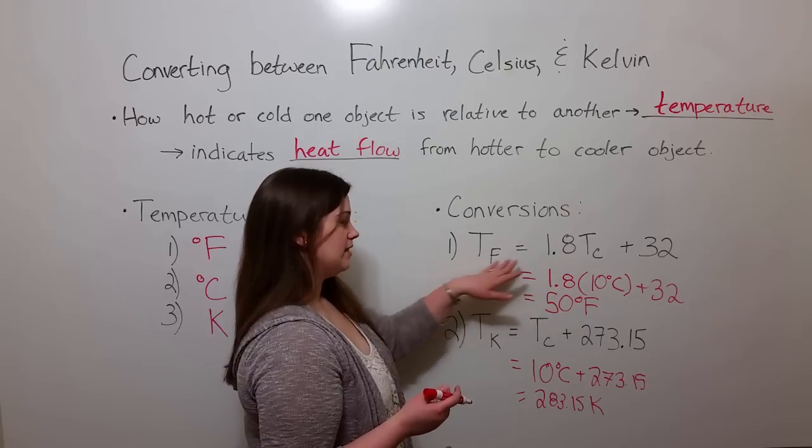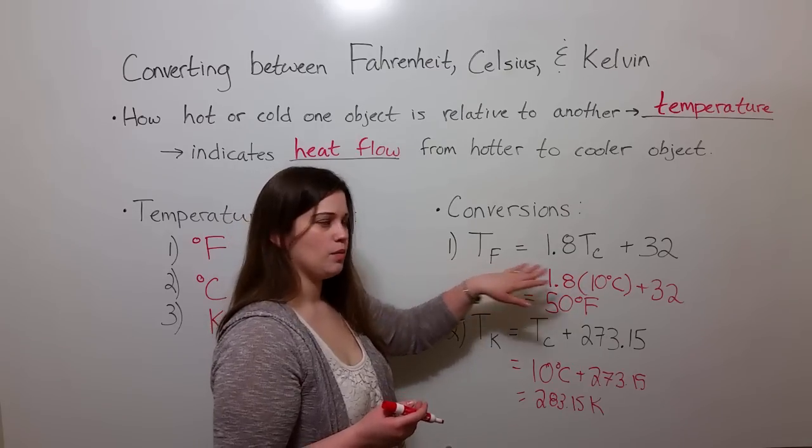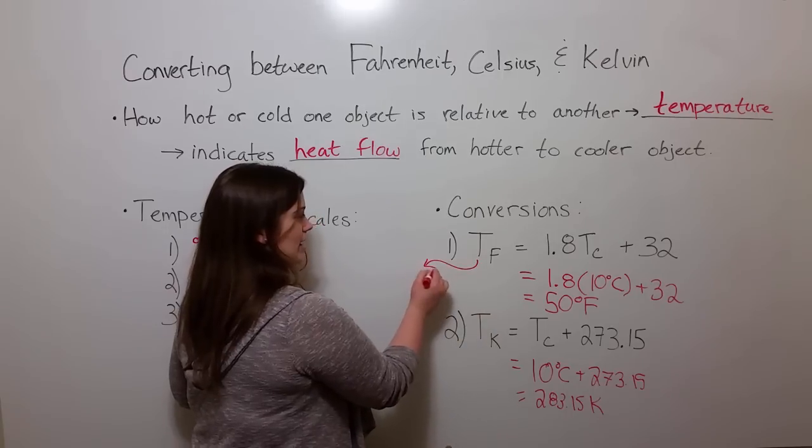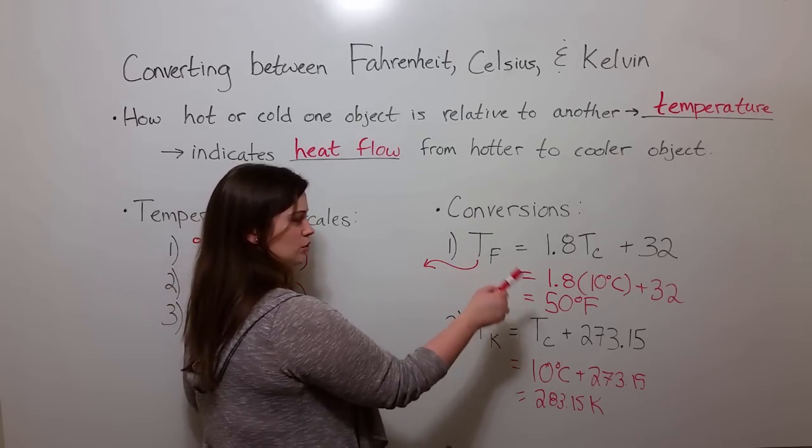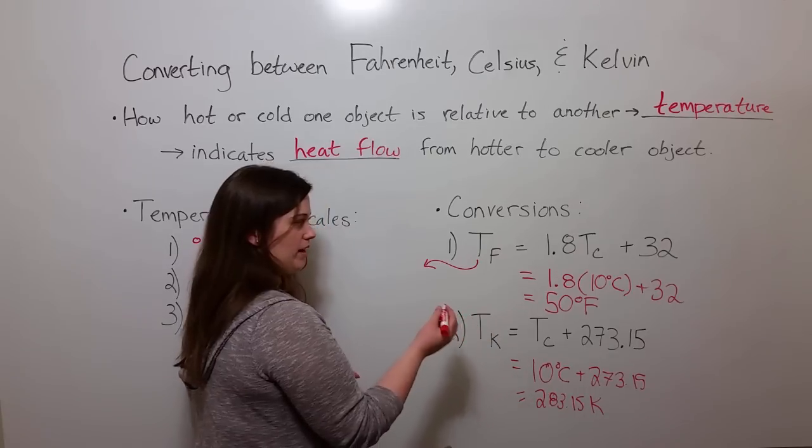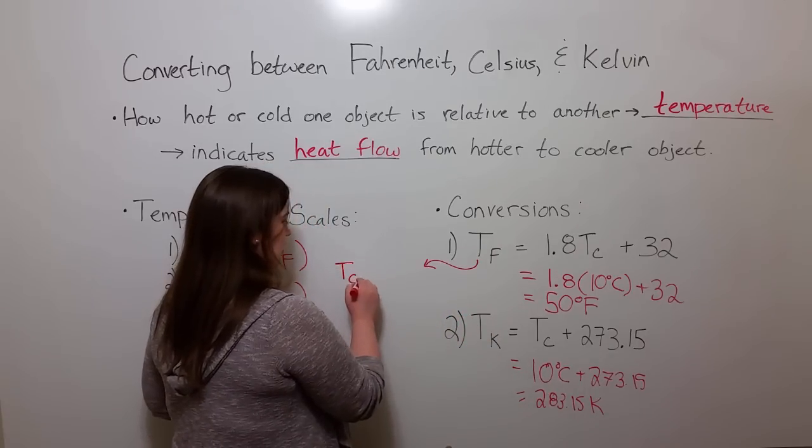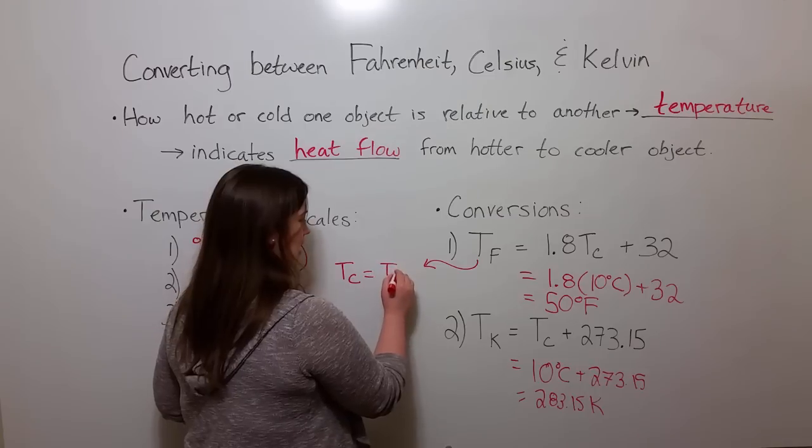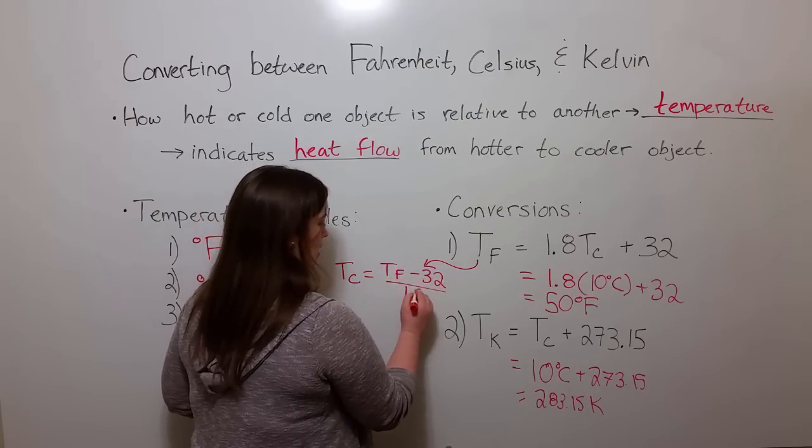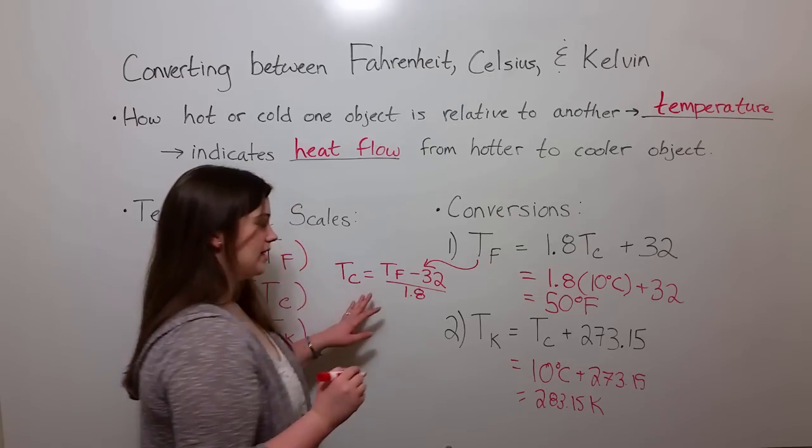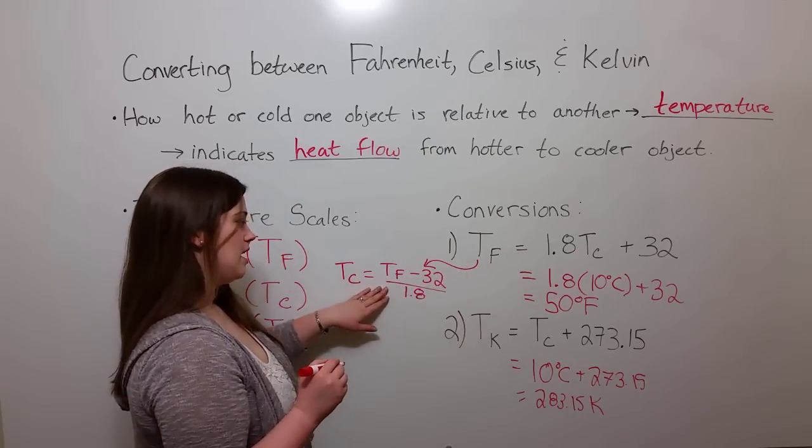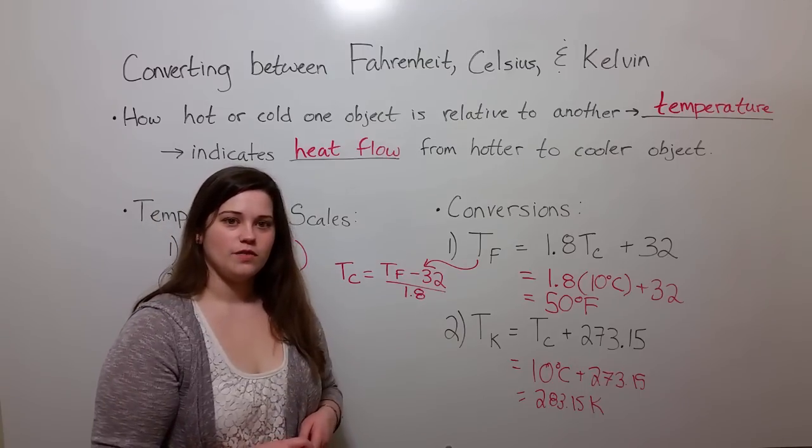So if we had the temperature in Fahrenheit, we wanted to solve for the temperature in Celsius, we would simply rearrange this equation by subtracting 32 from each side and then dividing by 1.8. This means that TC equals TF minus 32 divided by 1.8. If you'd like to see how to go through the steps to get from this one to this one, again, see that video on solving equations.